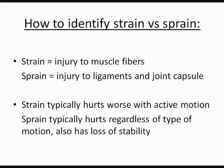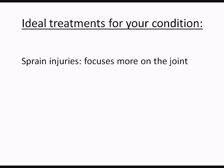On the adverse side, passive motion is when somebody else is helping you move your joint. A sprain typically hurts regardless of the type of motion, and you'll also notice a loss of stability. So a strain is going to hurt more when you use your muscle to move a joint or limb, whereas a sprain is going to hurt regardless of who is moving it.